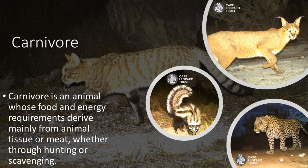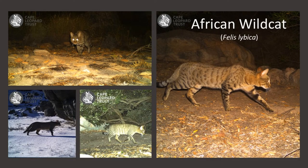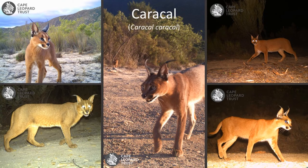Last but not least, the carnivores. A carnivore is an animal whose food and energy requirements derive mainly from animal tissue or meat, whether through hunting or scavenging. Examples of these are Striped Polecat, African Wildcat, Caracal, and Leopard.